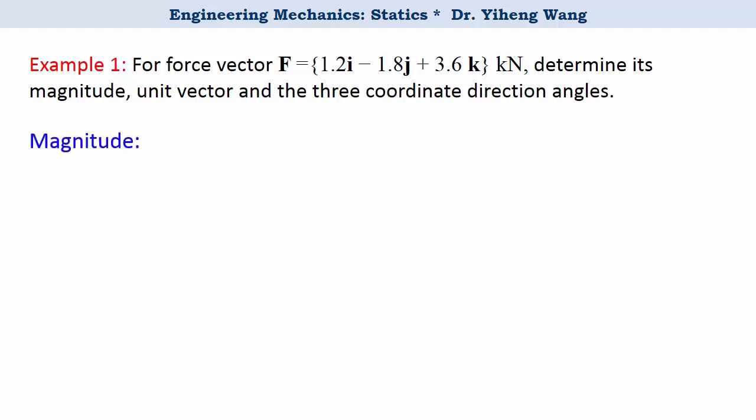Let's look at the magnitude first. The magnitude of any Cartesian vector simply equals the square root of the sum of the squares of each component. Therefore from here we can easily calculate the magnitude to be 4.2 kN.